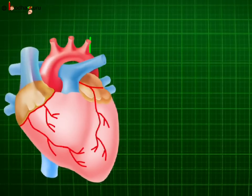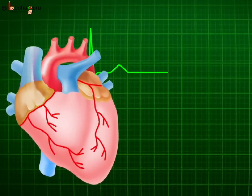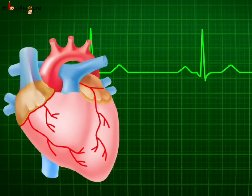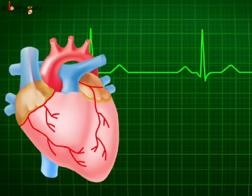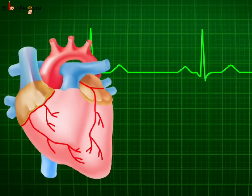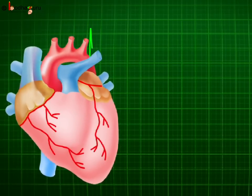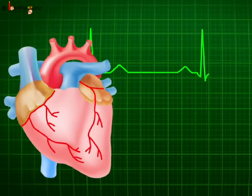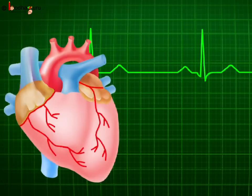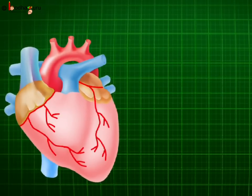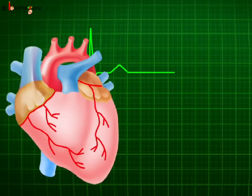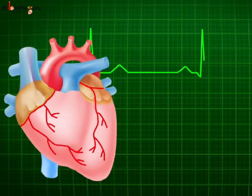Systole is the contraction phase of the cardiac cycle. Systole of a heart chamber causes blood to flow out of it into the blood vessels. So, systole of any heart chamber represents the time during which it contracts. When the atrium contracts, blood enters the ventricles, and when the left and right ventricles contract, blood ejects out into the aorta and the pulmonary artery respectively.